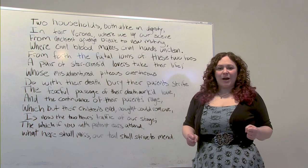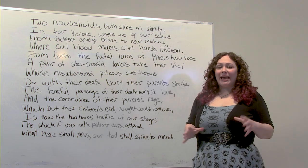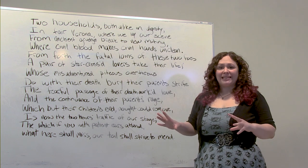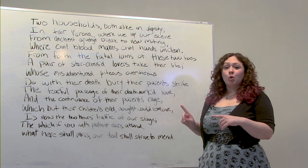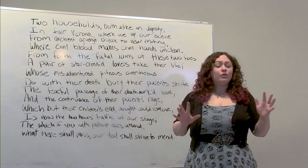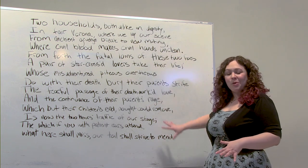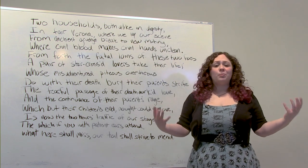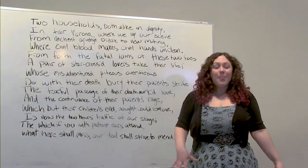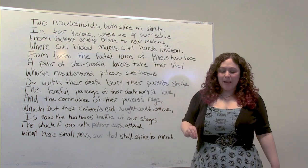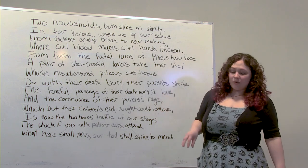Hey everyone, my name is Kim Douthat, and today we're going to be looking at Shakespeare — how to break down the text — and we're going to be using the prologue from Romeo and Juliet. You don't need a whole lot of materials. We have the text available right here for you. Shakespeare is meant to be performed, so I'm going to ask you to be reading aloud with me. If you want to take any notes, grab a writing utensil and something you can write on.